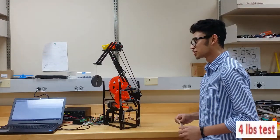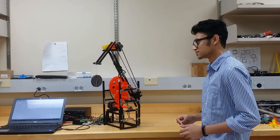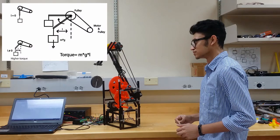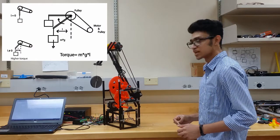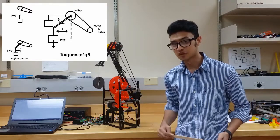I have attached a 4lbs weight to the robot. We can see from the experiment that the robot cannot lift a 4lbs weight. And why is that?